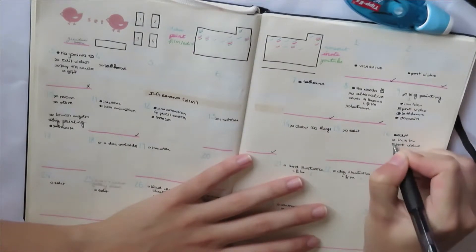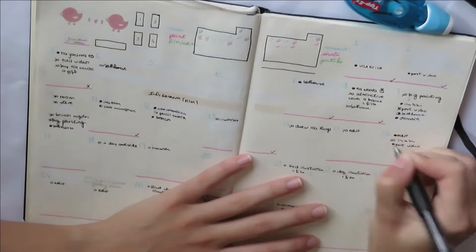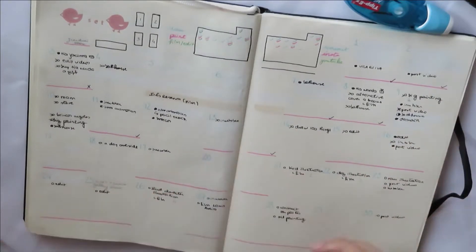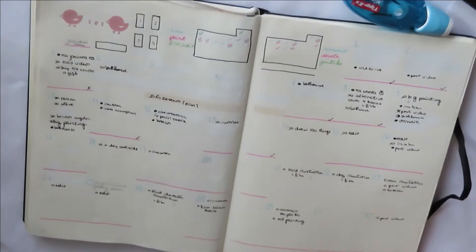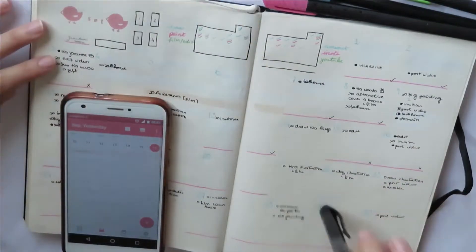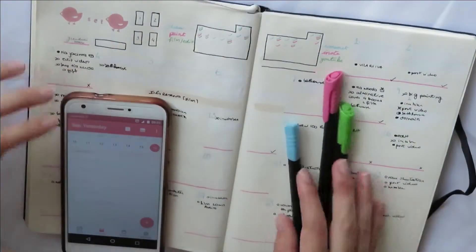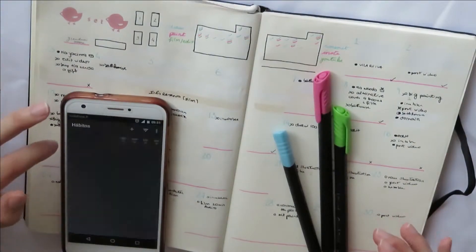This is an example of what I do every day. I just transfer to-dos for a different day, mark them off or not. And with these colored pens I habit track.